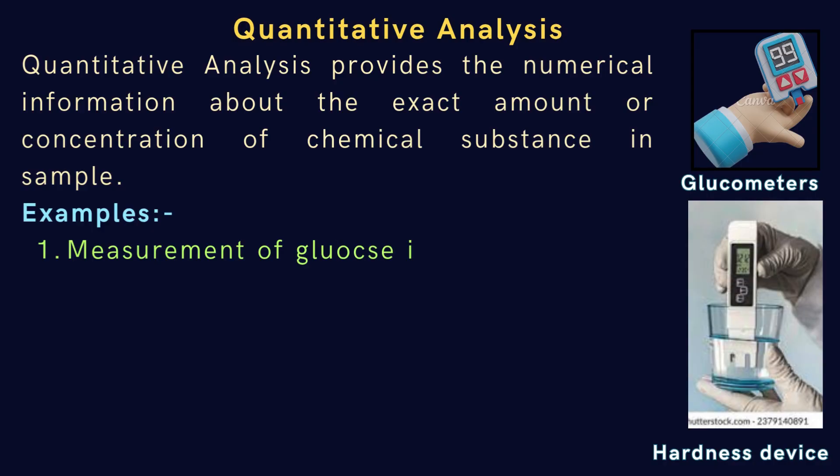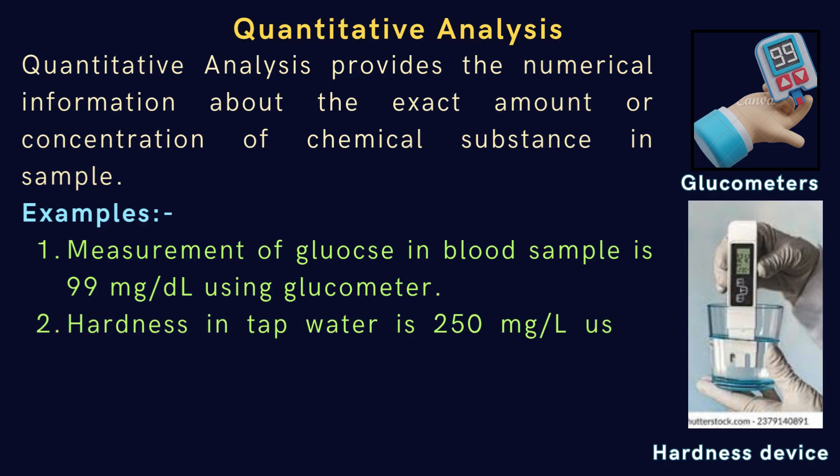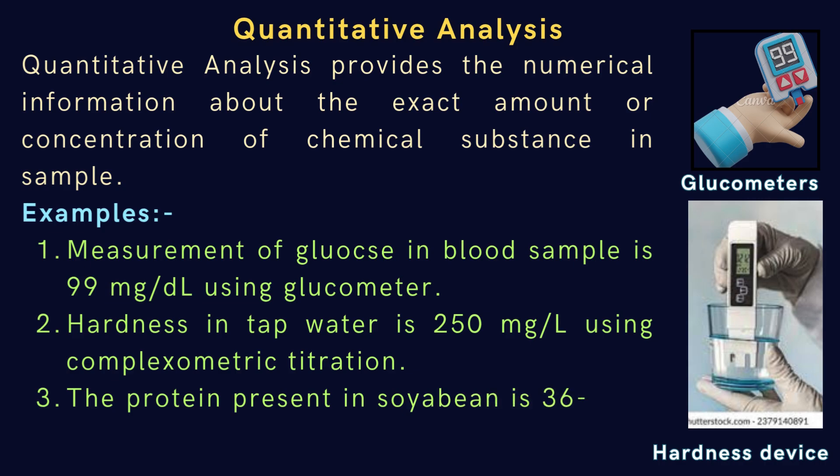Examples: Measurement of glucose in blood sample is 99 mg per deciliter using glucometer. Hardness in tap water is 250 mg per liter using complexometric titration. The protein present in soybean is 36-40% by Kjeldahl method.